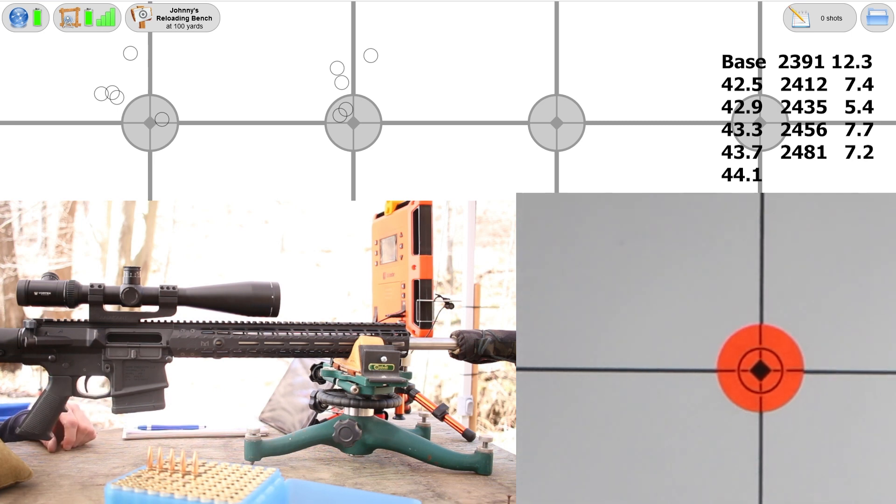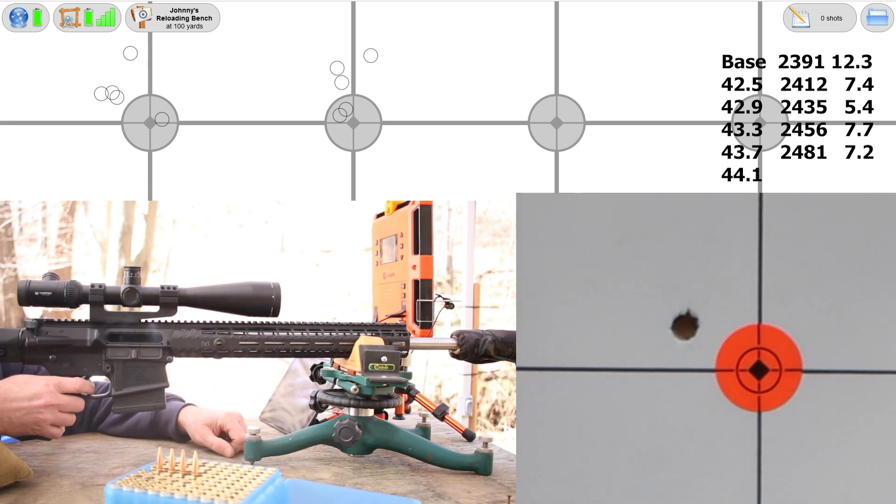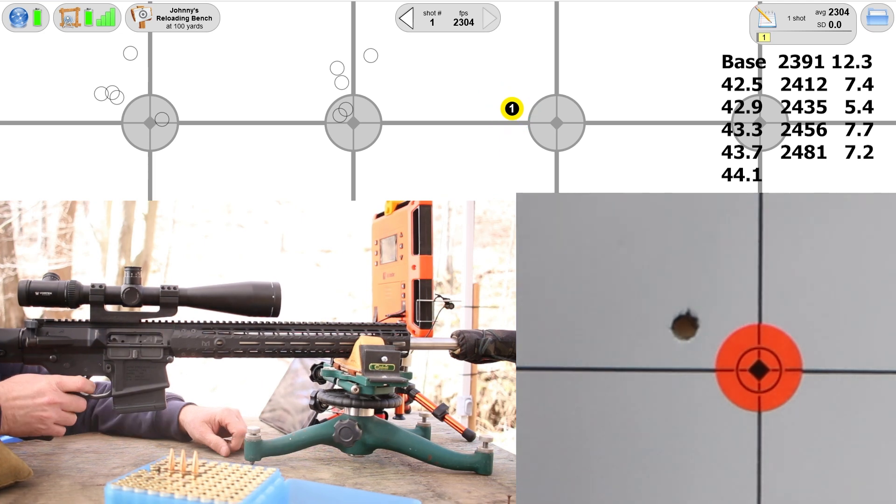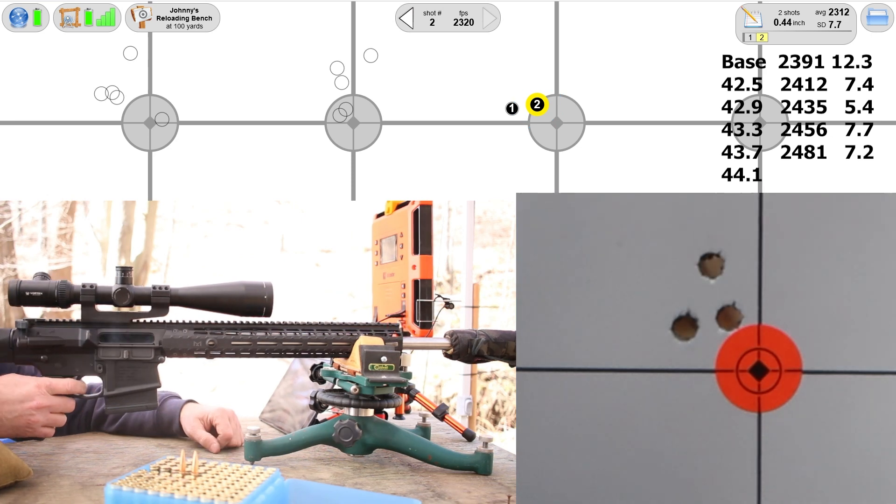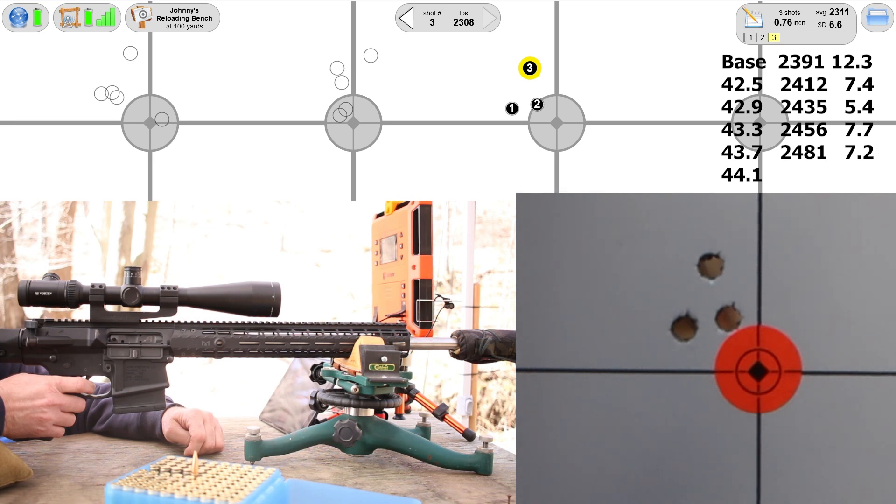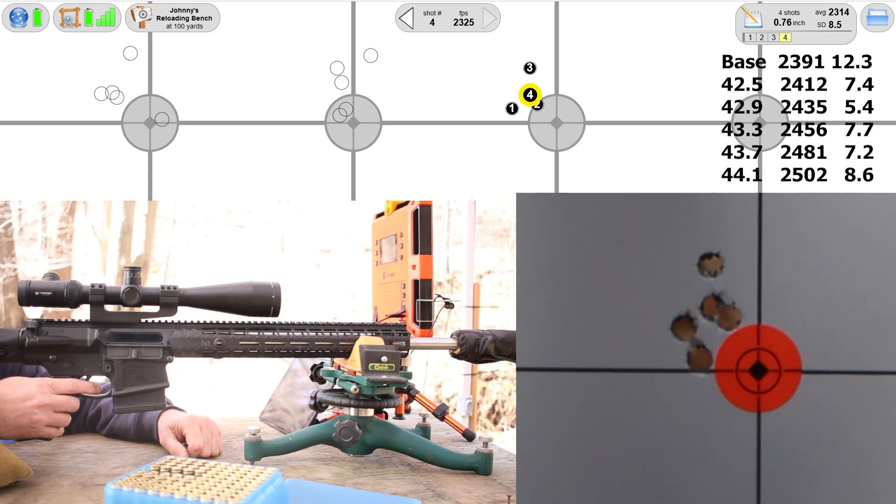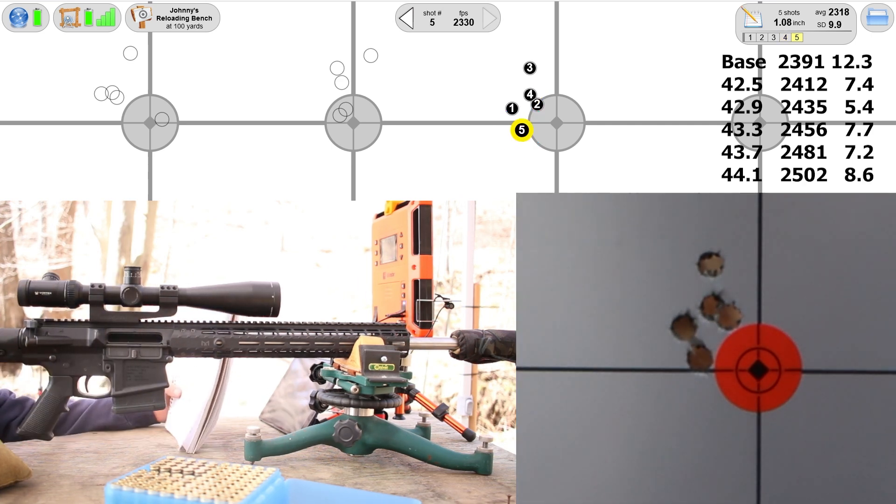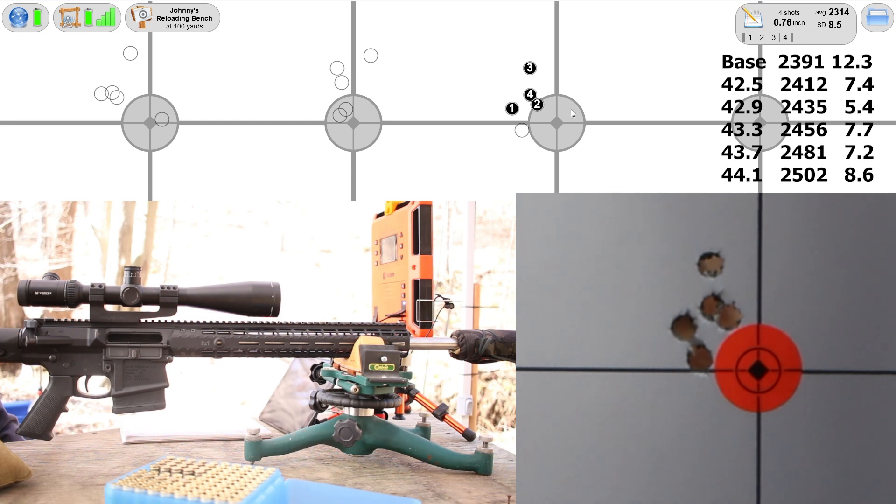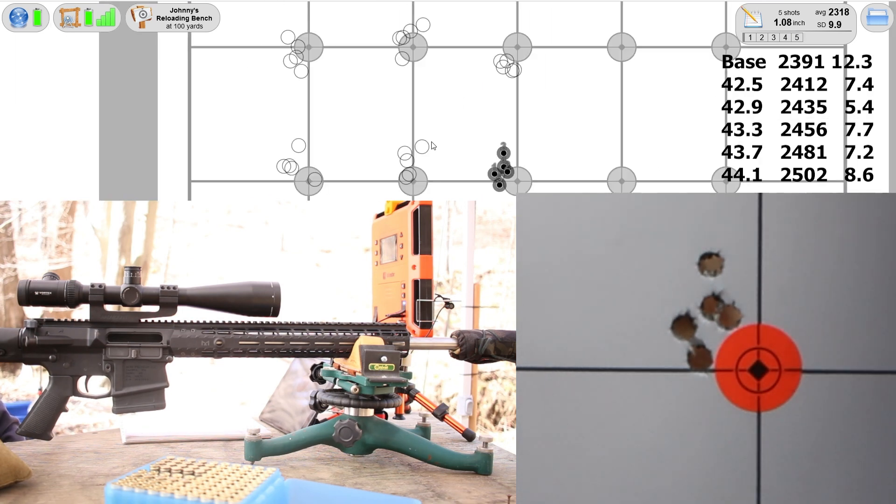Our last load here, 44.1 grains. Our final velocity, 2502, 8.6 standard deviation. Group was 1.08 inches. I thought we were going to have our first one under an inch until that last shot - we were at 0.76 inches up to there. Makes me want to try this bullet with Varget. Let me go hang a fresh target and we'll move on to 6 ARC.